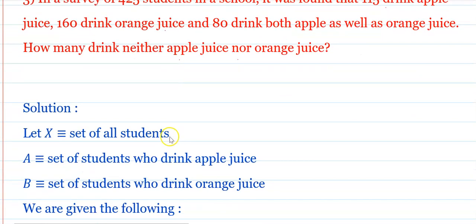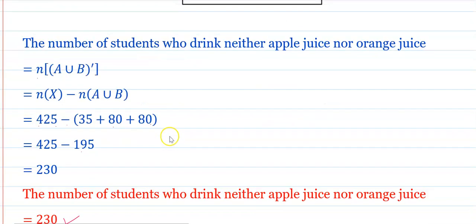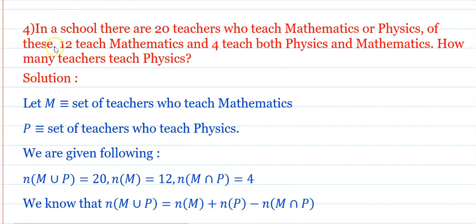Question 4: In a school there are 20 teachers who teach mathematics or physics. Of these, 12 teach mathematics and 4 teach both physics and mathematics. How many teachers teach physics? This is a very easy problem.